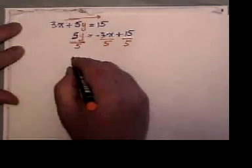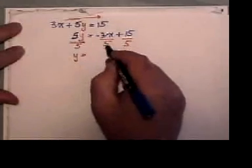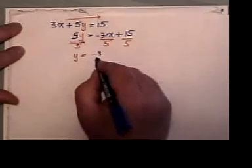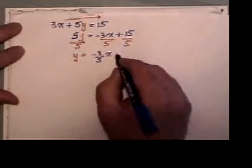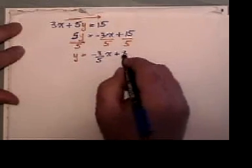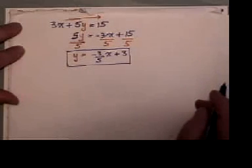And so, we end up with y solved by itself. We get a minus 3 over 5 x, which I'll write like that, and a 15 divided by 5 is a plus 3. So, now we have solved for the variable y.